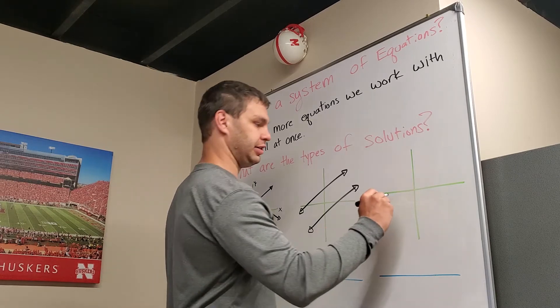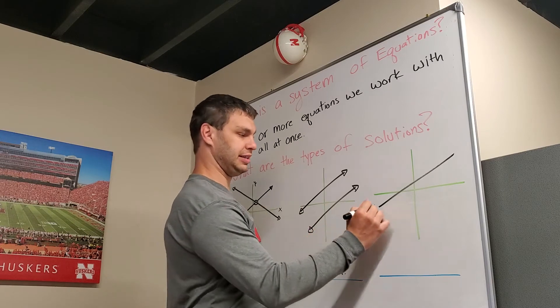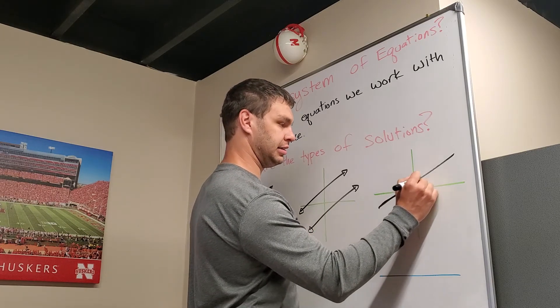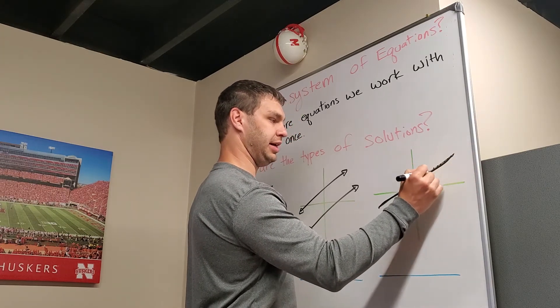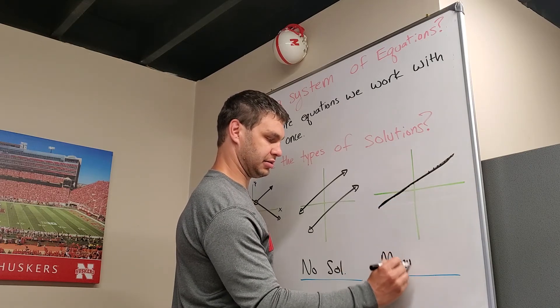Then the last type is if we have a certain line, and the other equation we're working with is the exact same line, then this crosses infinitely many times, so we're going to say this is many solutions.